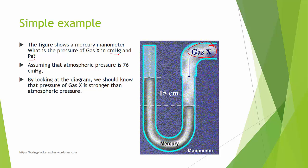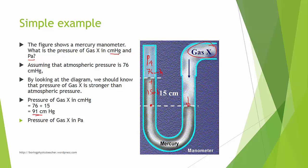By looking at the diagram, gas X has a stronger pressure than atmospheric pressure. The pressure of gas X equals 76 cm Hg plus another 15 cm of mercury, giving 91 cm Hg. To convert to Pascal, we substitute the value of 91 cm Hg into the pressure formula to obtain the gas pressure in Pascal.